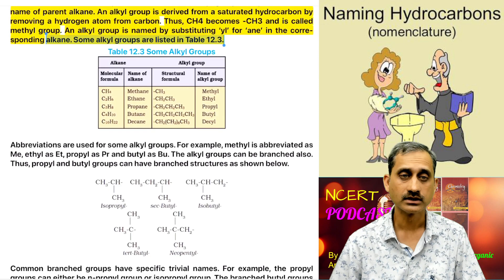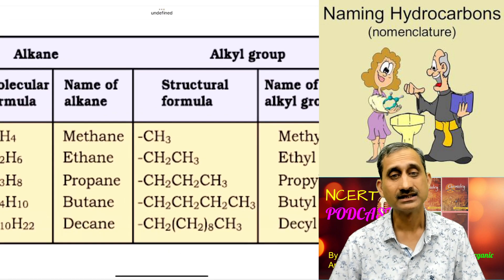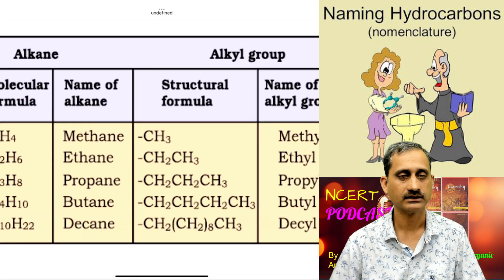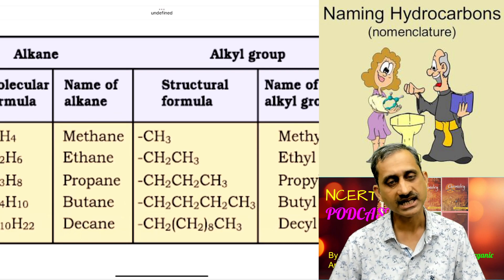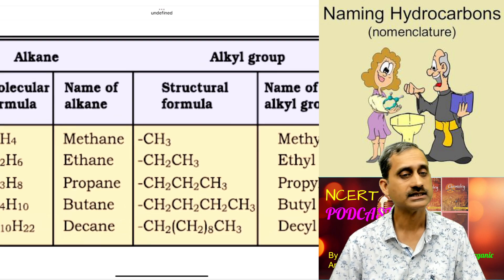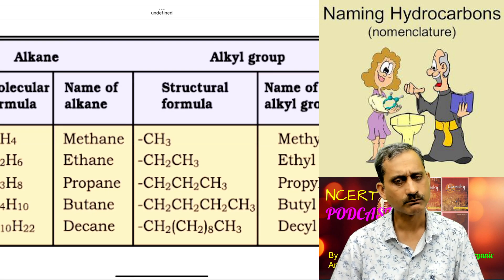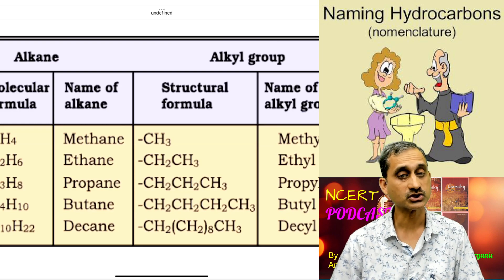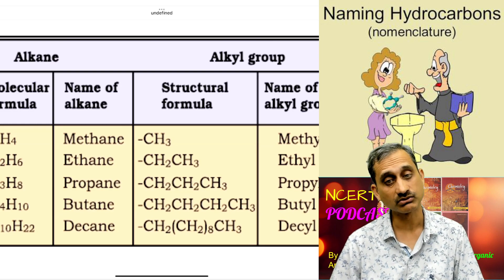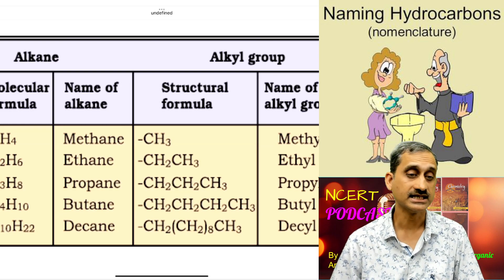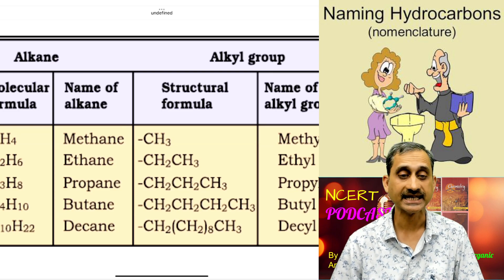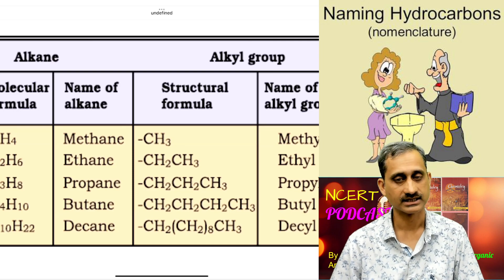Table 12.3 — alkyl groups derived from alkanes: CH4 (methane) gives CH3 (methyl); C2H6 (ethane) gives CH2CH3 (ethyl); C3H8 (propane) gives CH2CH2CH3 (propyl); C4H10 (butane) gives CH2CH2CH2CH3 (butyl); C10H22 (decane) gives the corresponding decyl group.